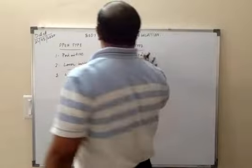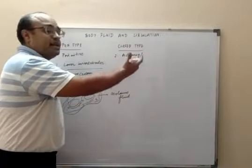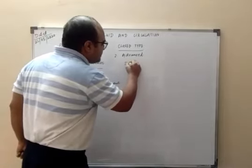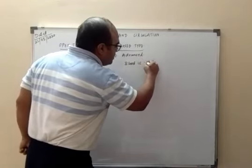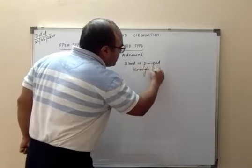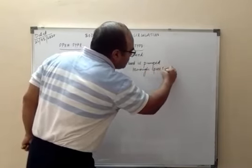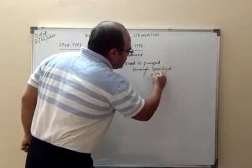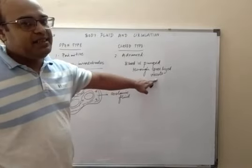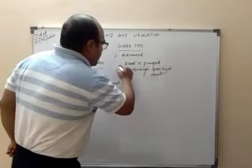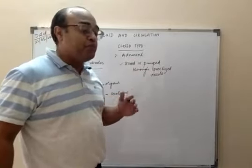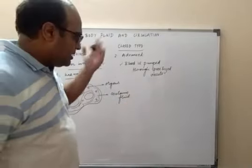This open type of circulatory system is primitive and is found in lower invertebrates. In the closed type of circulatory system, which is the advanced type, the blood is pumped through specialized vessels. I would like to clear a point which you might encounter in various other concepts.